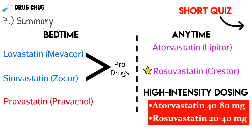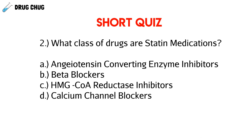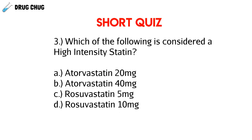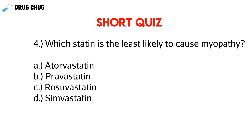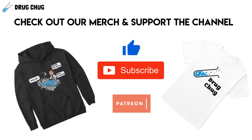Let's take a short quiz. Question one: which of the following lipids comes primarily from our diet? Question two: what class of drugs are statin medications? Question three: which of the following is considered a high-intensity statin? Question four: which of the following is least likely to cause myopathy? If you enjoyed this video, hit like and subscribe, check out our merch and Patreon starting at just a dollar, and leave any questions in the comments below — until next time!